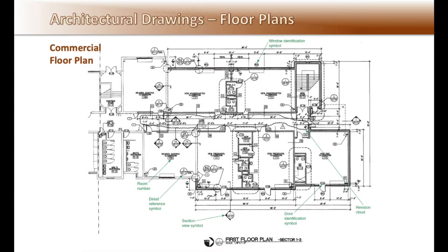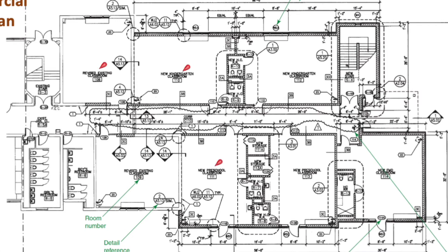Here is an example of a commercial floor plan. Note room names and numbers, section marks, door numbers which relate to the room numbers, and window type identifications. Also note the cloud lines identifying revisions to the project.